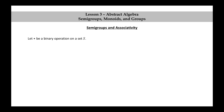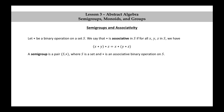Semi-groups and associativity. Let star be a binary operation on a set S. We say that star is associative in S if for all X, Y, Z in S we have X star (Y star Z) is equal to (X star Y) star Z. A semi-group is a pair S star where S is a set and star is an associative binary operation on S.